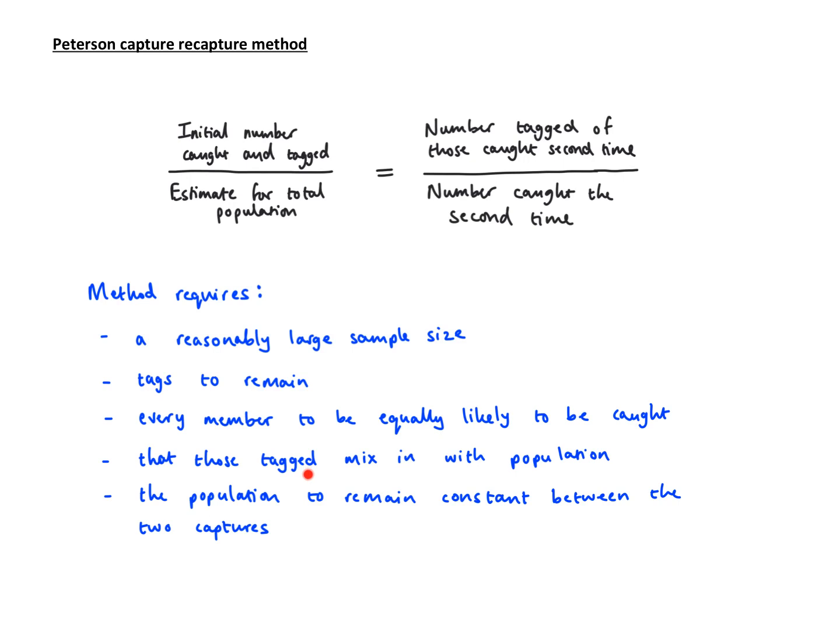Those tagged mix in with the population. You would have tagged some and then released these animals. These animals need to mix in with the rest of the population so that every member is equally likely to be caught, which happens for the tags as well. Finally, the population must remain constant between the two captures. If too much time has passed, the animals might have moved on, some may have died, some may have been born. You don't want it to be too long between the two captures.